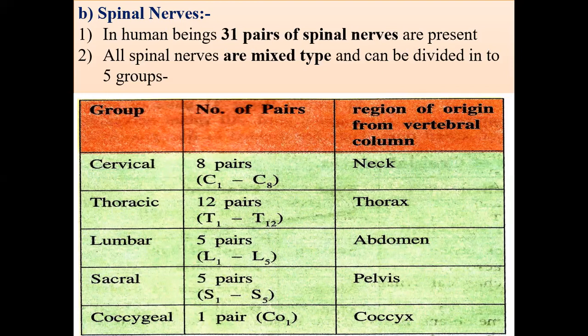These spinal nerves can be divided into five types according to their region. The first type is in the neck region, called the cervical group. Spinal nerves in the cervical region total eight pairs, and they are symbolized as C1 to C8, where C stands for cervical, representing the cervical spinal nerves.